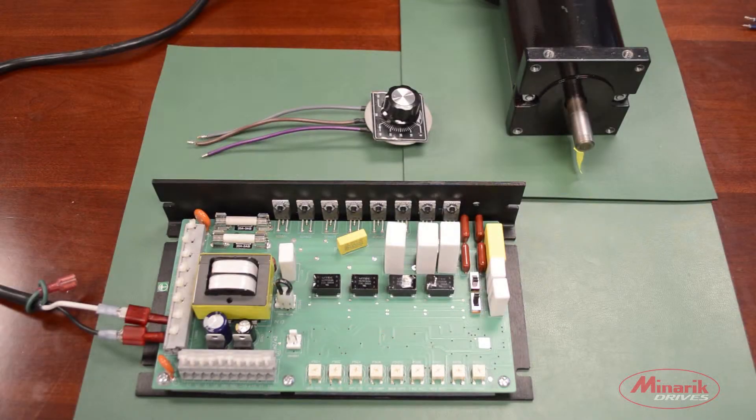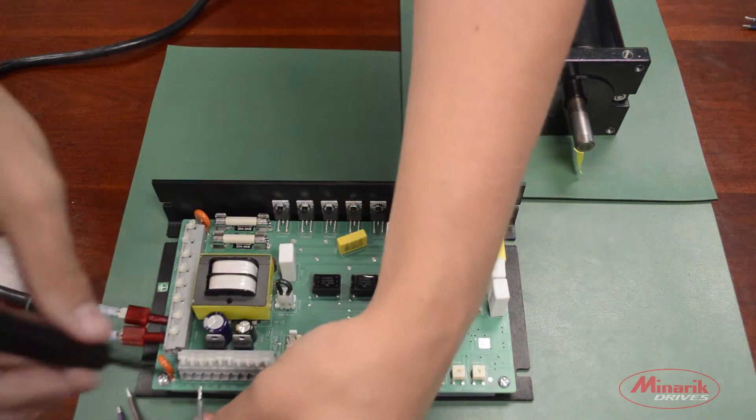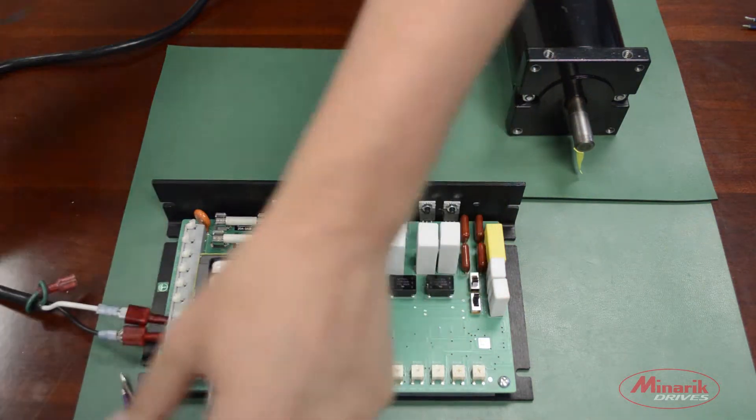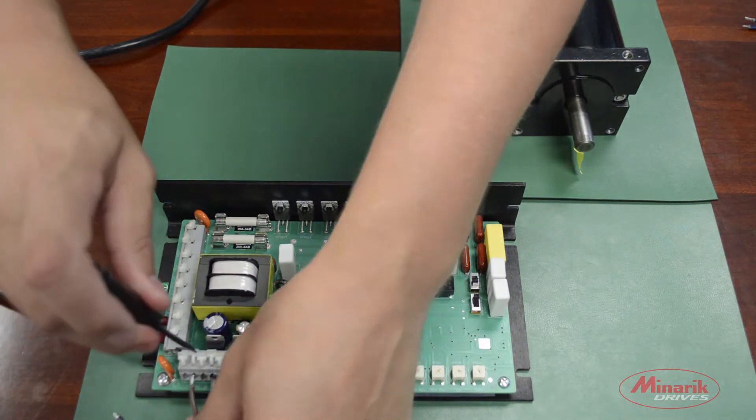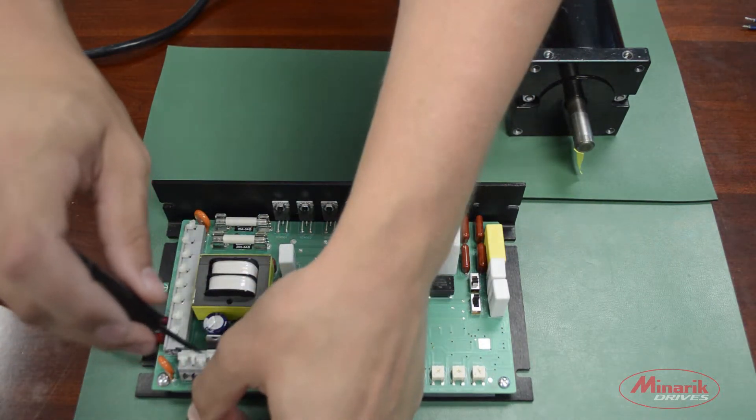Next we're going to wire up a speed potentiometer. We're going to take the common lead and wire that to S0, the wiper to S2, and the positive lead of the potentiometer to S1.